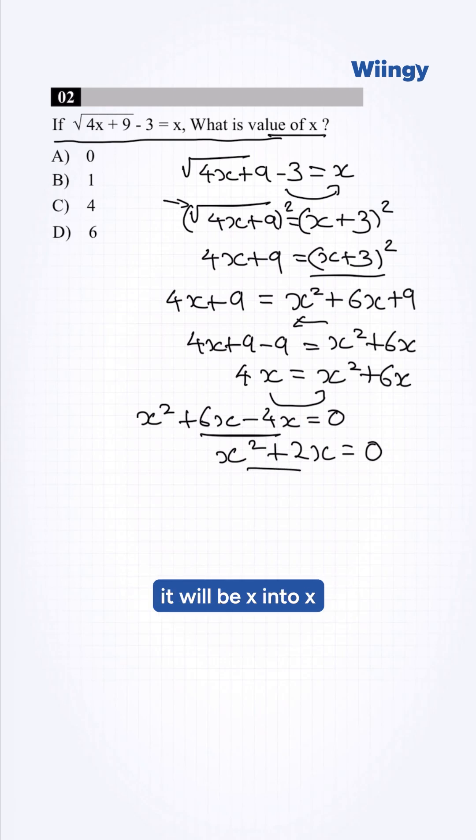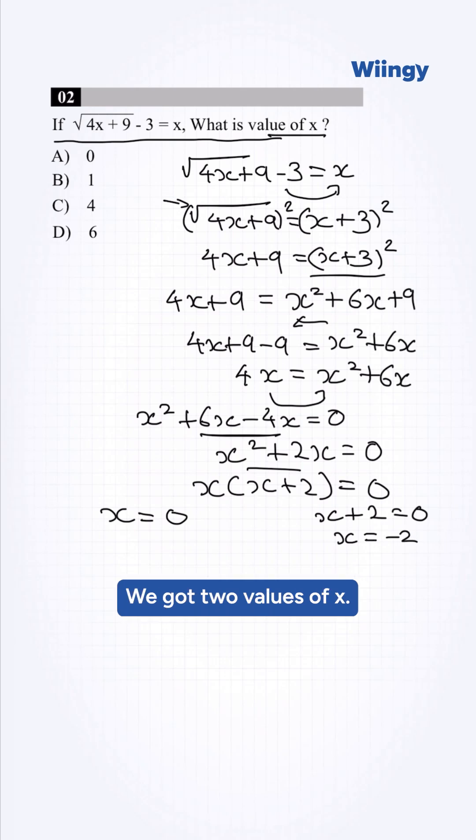Taking x as common here, it will be x(x + 2) = 0. Therefore, x = 0 and x + 2 = 0. Here, x = -2. We got two values of x.